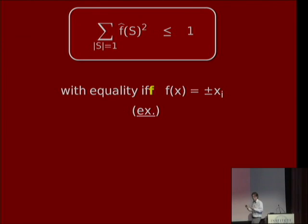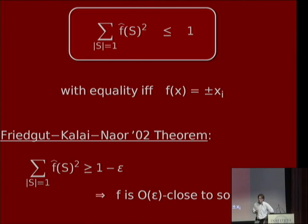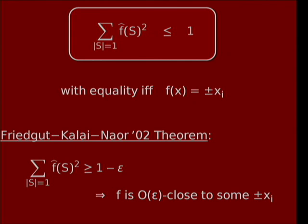We should try to get a stability or robustness version of this result. That was provided by a theorem of Freigut, Kalai, and Naor. They showed that if a Boolean function has one-minus-epsilon of its Fourier squared coefficients at level one, then it has to be quite close to either a dictator or a negated dictator — meaning the two functions differ on an O(epsilon) fraction of the 2^n inputs. So that looks pretty good, but these dictators don't look like genuine functions on n coordinates since they only depend on one coordinate.